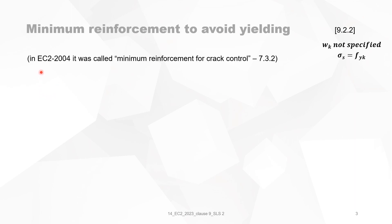In Eurocode 2, 2004, the present Eurocode, it was called minimum reinforcement for crack control. And that was in chapter 7.3.2.